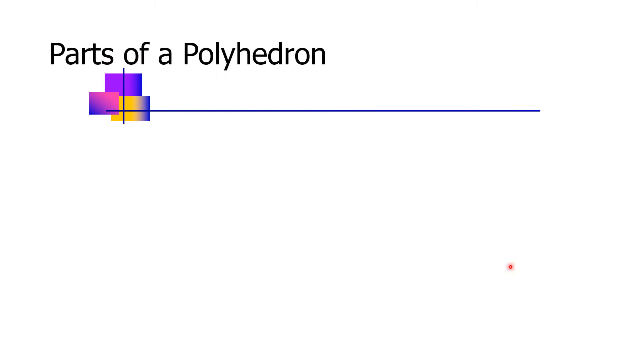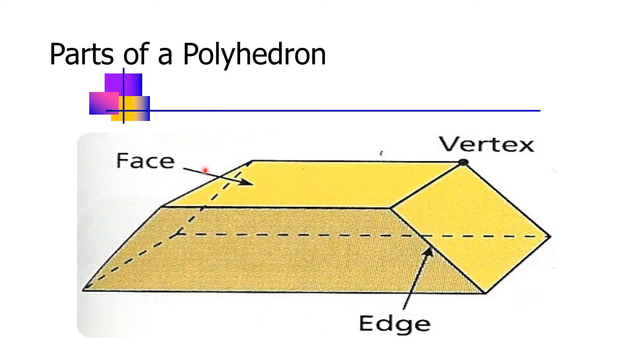Parts of a polyhedron: this is the face, the vertex, and the edges or the edge.